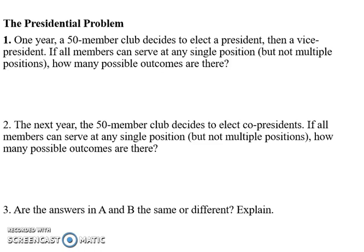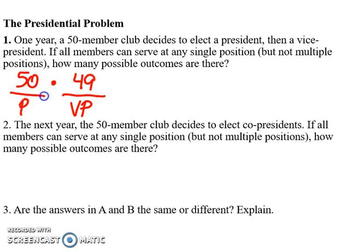Now we get to the presidential problem. Here, a president and vice president are being elected from a group of 50 people, and anyone can serve. When I think about my president, there are 50 total people who could be chosen. Then for VP — say Sam was chosen as president — Sam can't also be the VP, so there are 49 remaining options. Multiplying those together gives 2,450 different ways to pick a president and then a vice president.